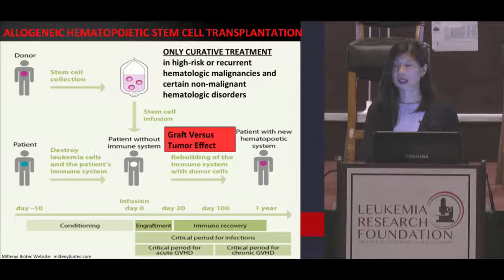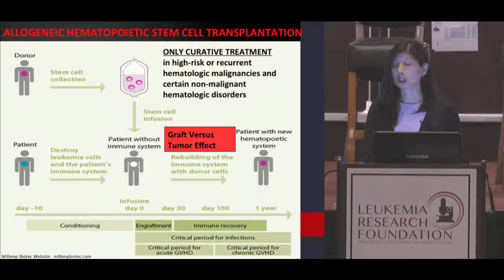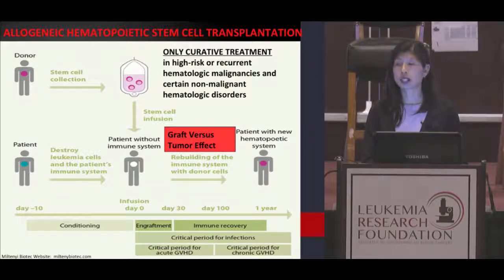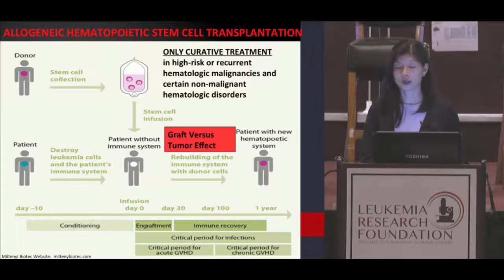Once the chemotherapy has cleared out of their system, the stem cells are infused on what we call day zero. Typically within the first couple of weeks, most people will engraft their donor cells and start to produce normal blood cells. Amongst those blood cells are new cells for a new immune system, which hopefully will develop into what we call a graft-versus-tumor effect. This is where these new donor cells will identify residual tumor cells as foreign and therefore mount an attack.